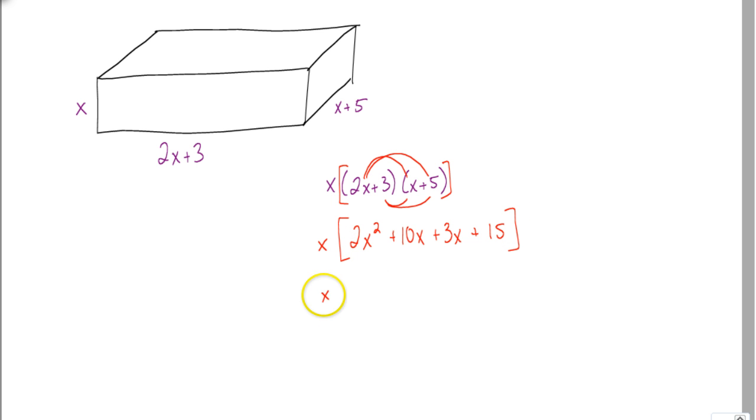Now, we could simplify inside these brackets that 10x plus 3x would be 13x. So, we'd have 2x squared plus 13x plus 15.